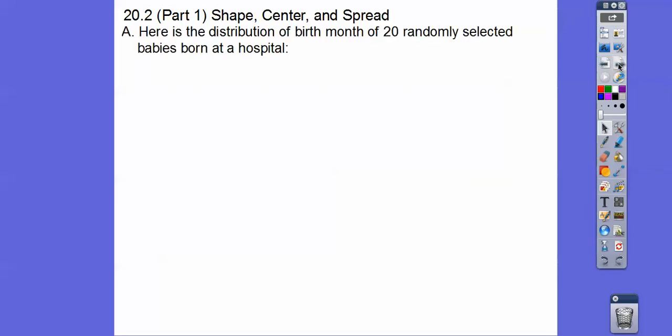So here's the distribution of birth months of 20 randomly selected babies born at a hospital. So here's the birth month. This would be May. This would be July. This would be November, February, and so on.